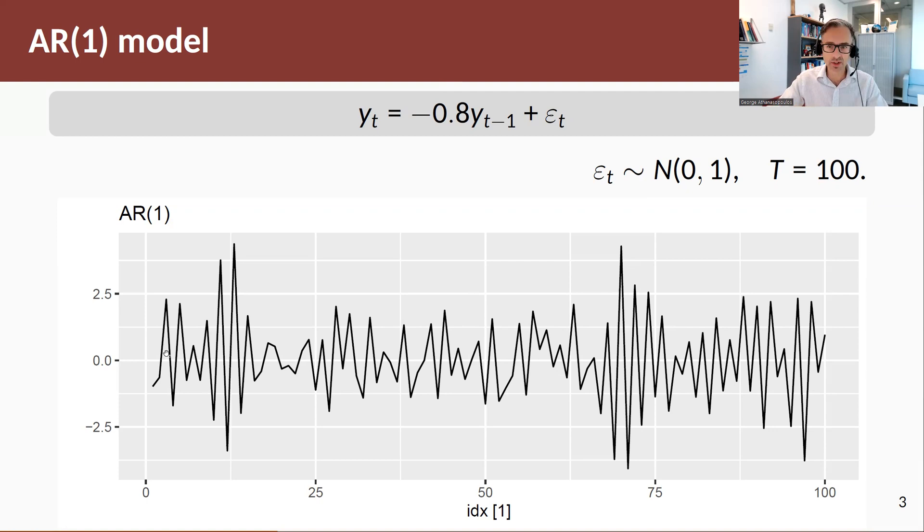First, it oscillates—it goes from negative to positive values. That oscillating behavior is because of the negative coefficient in my phi term. So my next observation is a negative proportion of the previous one, hence the oscillating behavior. And it oscillates around zero.